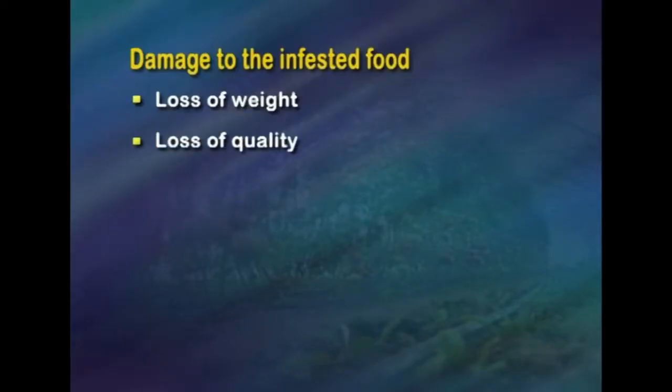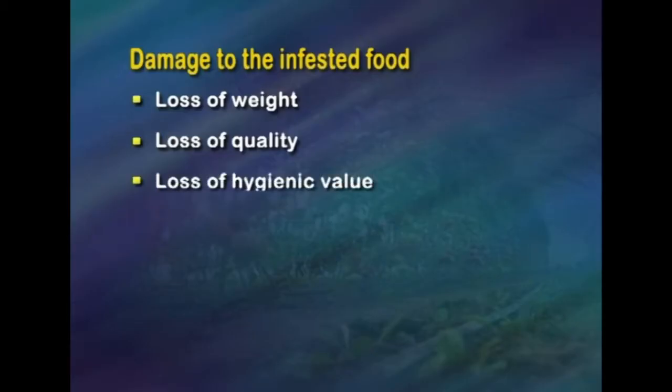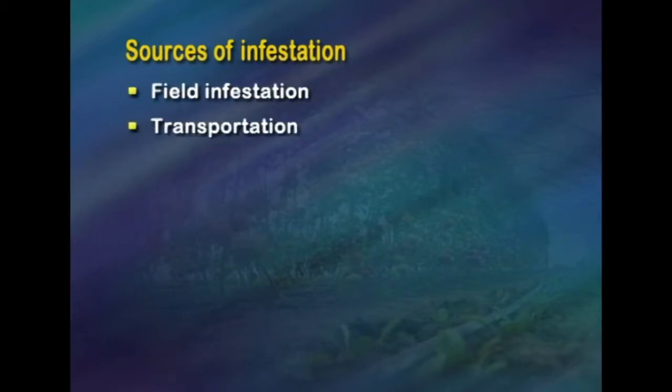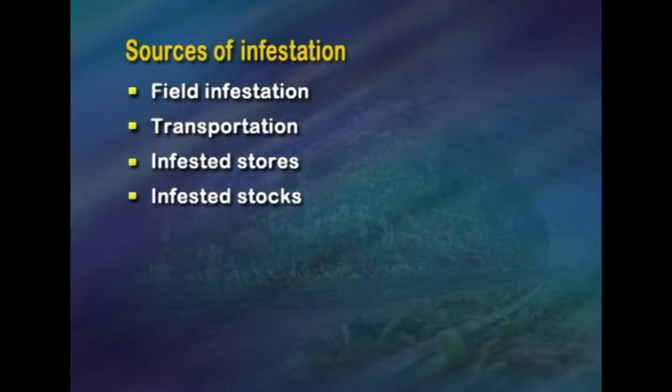Damage to infected food can be broadly classified as loss of weight — losses in weight can be known by weighing in and weighing out a particular lot of produce, and insect infestation can be estimated by count or weight method, or by weight-to-volume ratio before and after storage. Loss of quality: insects eat away the endosperm, affecting nutritive value; gluten quality is also lost in the case of wheat. Loss of hygienic value occurs when grain is contaminated with excreta of rodents, dead insects, and insect excreta.